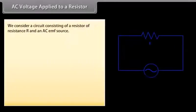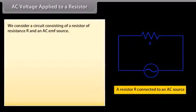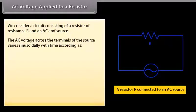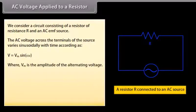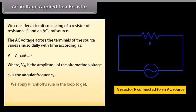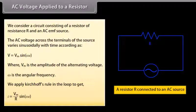AC voltage applied to a resistor: we consider a circuit consisting of a resistor of resistance R and an AC EMF source. The AC voltage across the terminals of the source varies sinusoidally with time according as V is equal to Vm sin(ωt), where Vm is the amplitude of the alternating voltage and ω is the angular frequency.